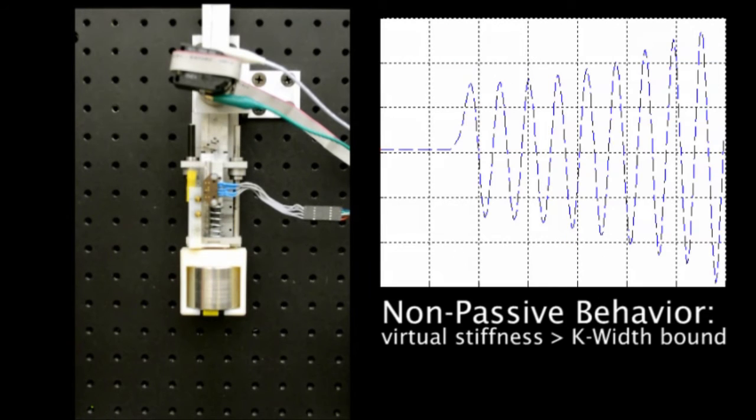On the other hand, when a virtual stiffness greater than our theoretical k-width bound is chosen, the system behaves non-passively.